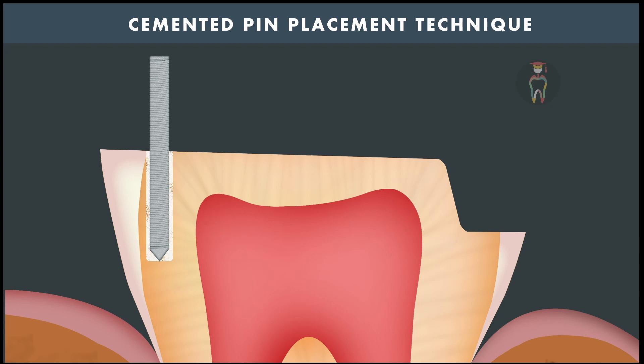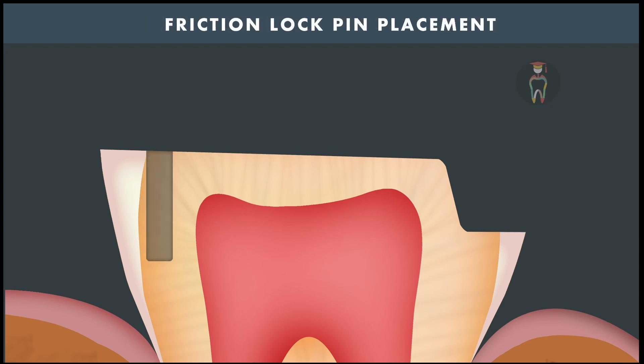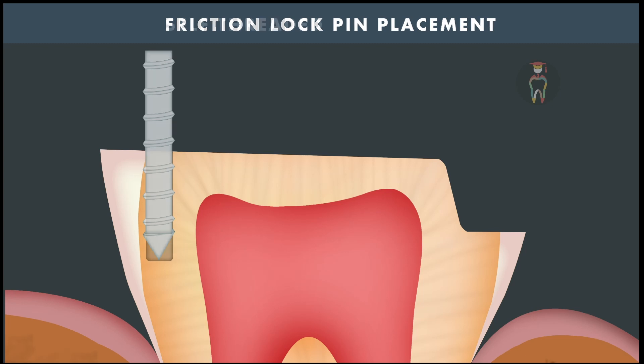For a friction lock pin, the pin channel prepared is smaller than the size of the pin. The friction lock pin is taken, placed at the pin channel, tapped with an instrument, and pushed inside — it will fit tightly inside the pin channel.